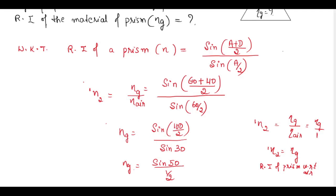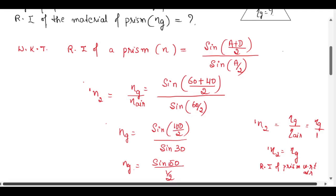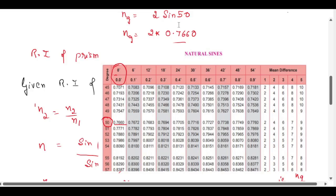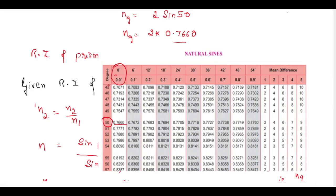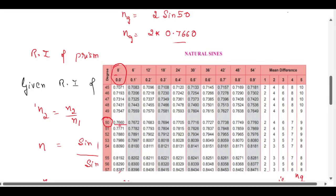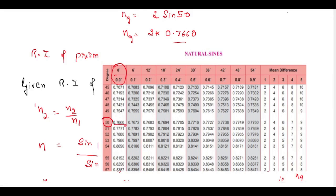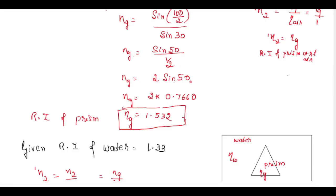So n_g equals sin((60 + 40)/2) divided by sin(60/2), which gives sin(50) divided by sin(30). Sin(30) equals 0.5, and to find sin(50) we use the natural sines page of the logbook, where sin(50) equals 0.7660. Therefore, the refractive index of glass is 2 × sin(50), which equals 1.532.